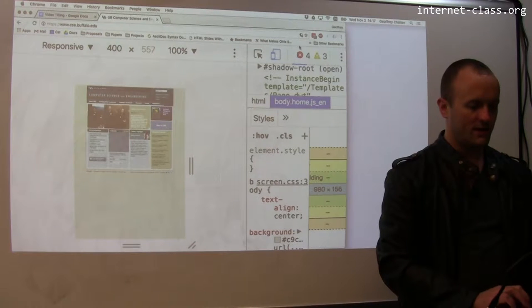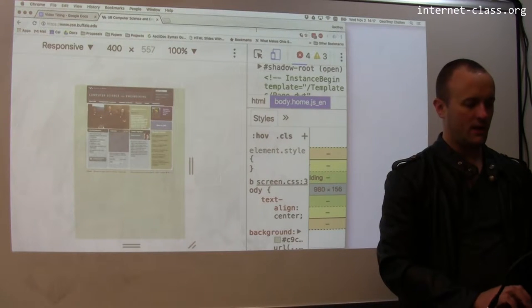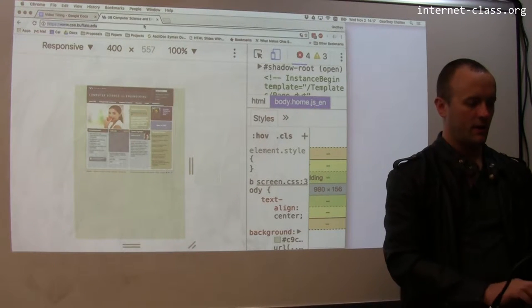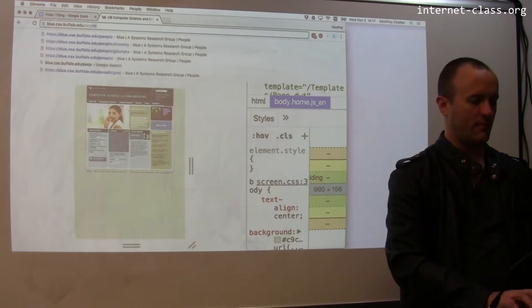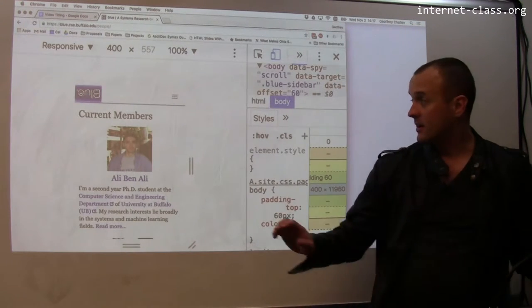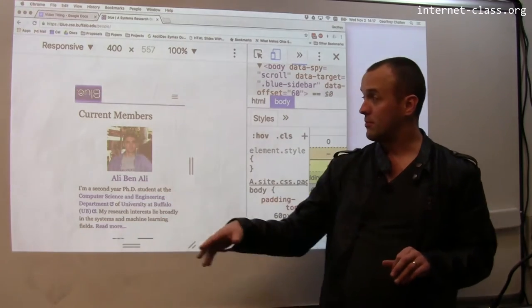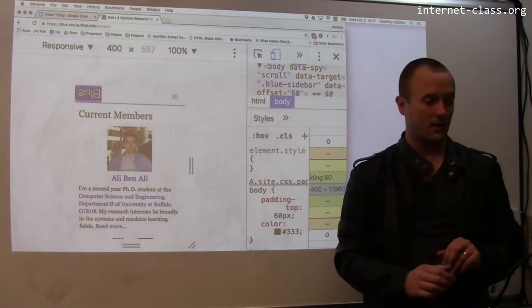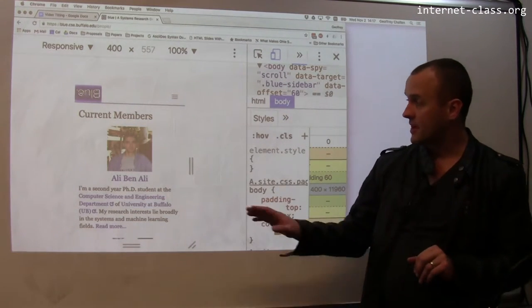So let me show you a different example and I'll toot my own horn a little bit here. So if you go to my group's web page, this is the list of members of the group and this is how it looks on mobile. So what are some of the features of this design?